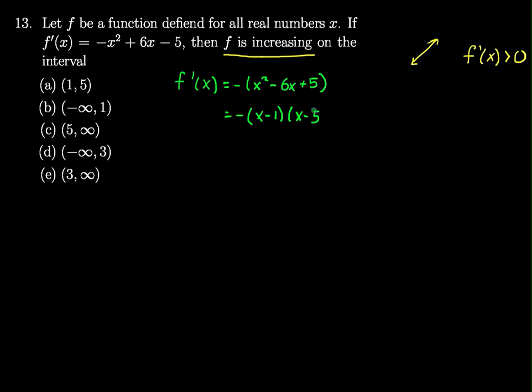You can see we have x times x will give me the x², -5x - 1x gives me the -6x, and -1 times -5 gives me 5.